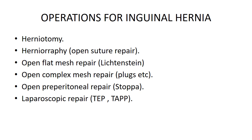Surgical options for inguinal hernia repair include: Lichtenstein open flat mesh repair, open complex mesh repair with plugs, open preperitoneal repair (Stoppa), and laparoscopic repair (TEP and TAPP). In children with lateral hernias with a persistent processus vaginalis — remove and close the sac.